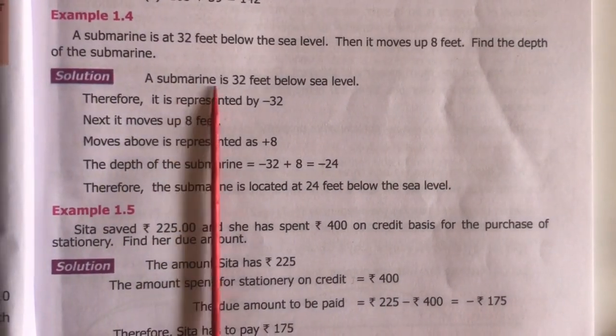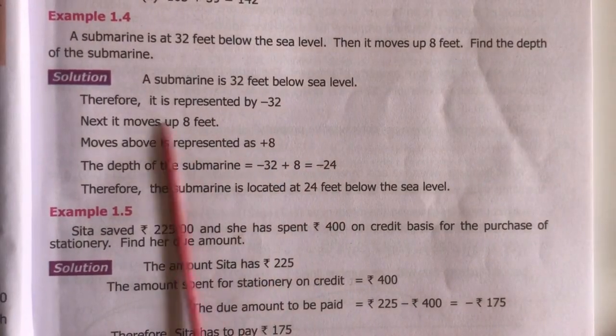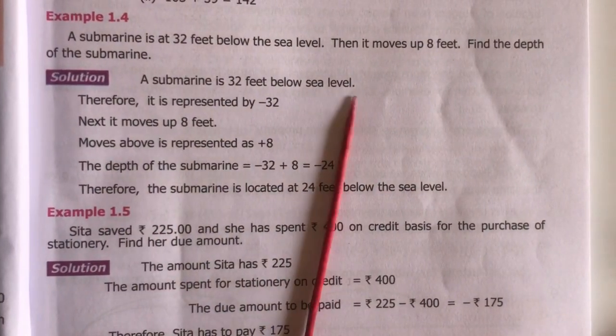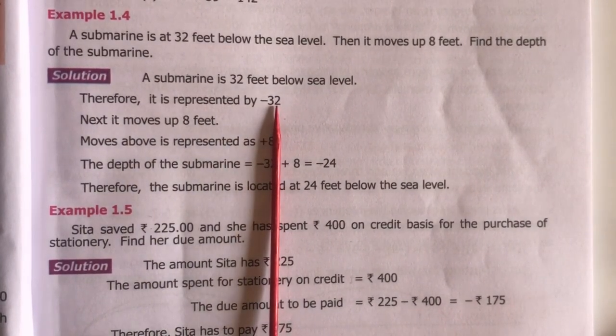The submarine is 32 feet below sea level. Below sea level, we used to take the number as negative. Therefore, it is represented by minus 32.